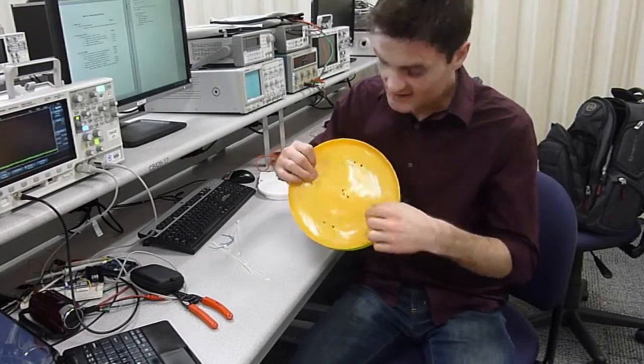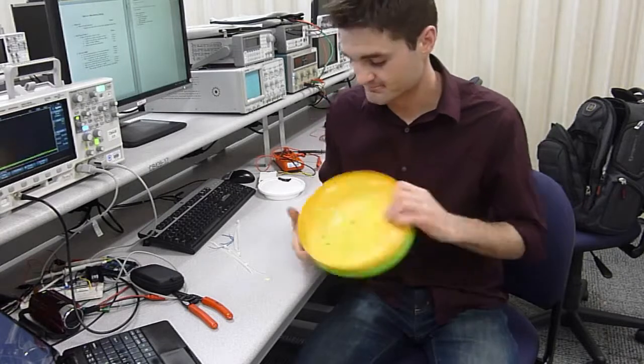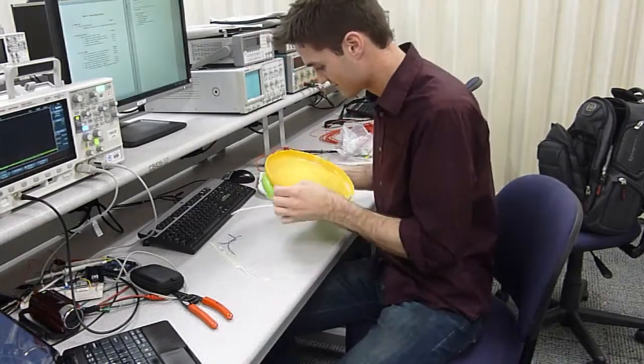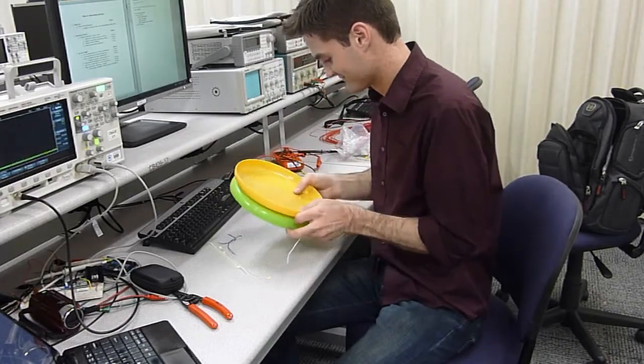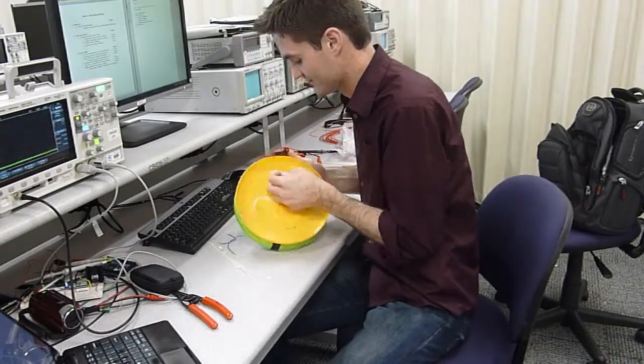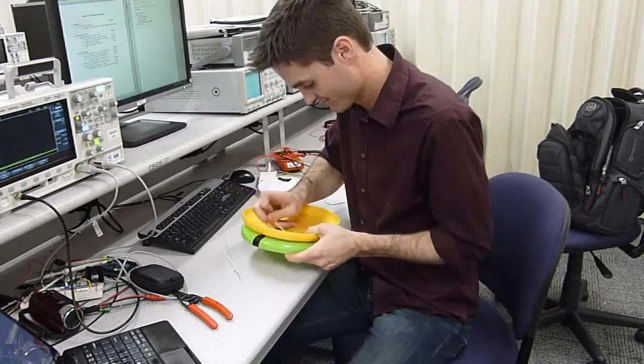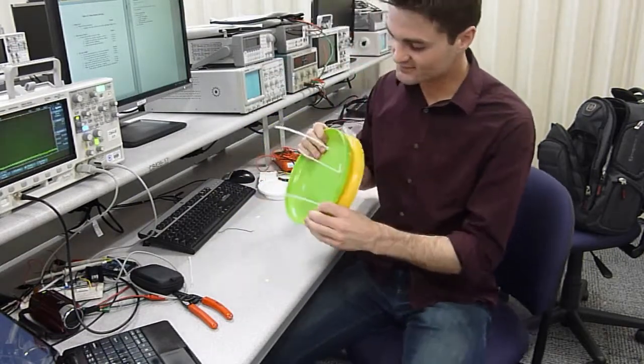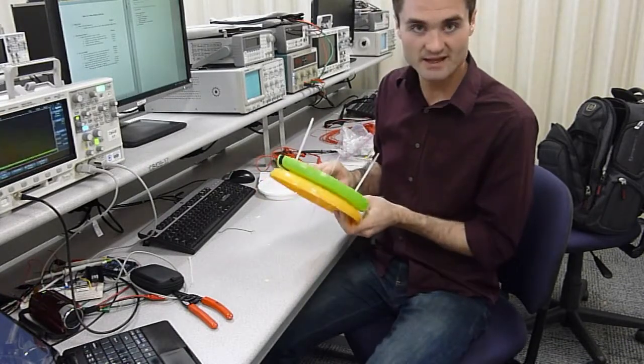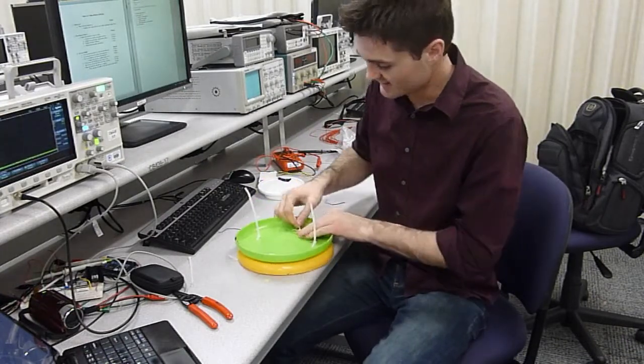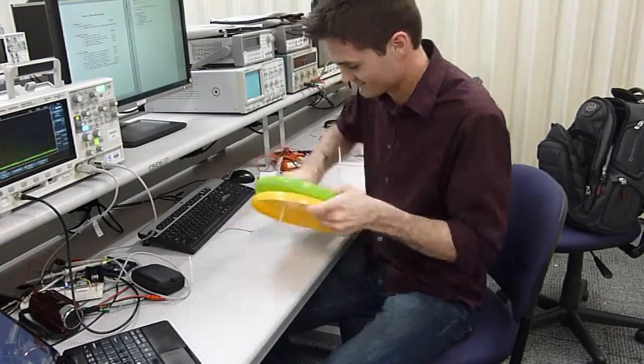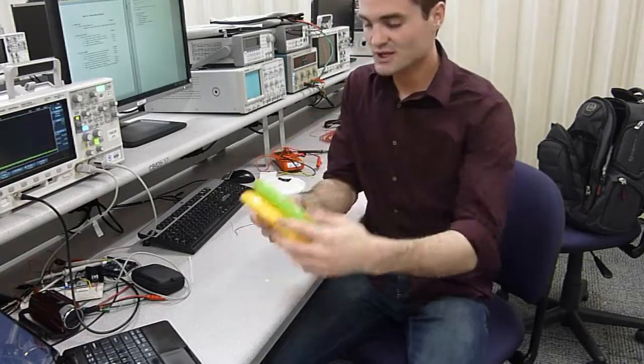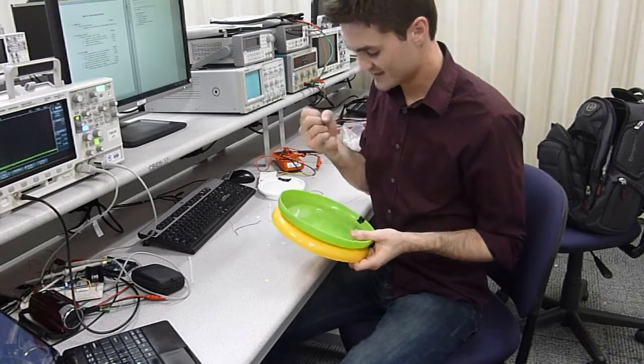Once we've drilled these, then we can put together our frisbee. So let's go ahead and do that real quick. All right, now we've got our zip ties together, and you can see our coil apparatus. Let's go ahead and break off these extra parts right here.